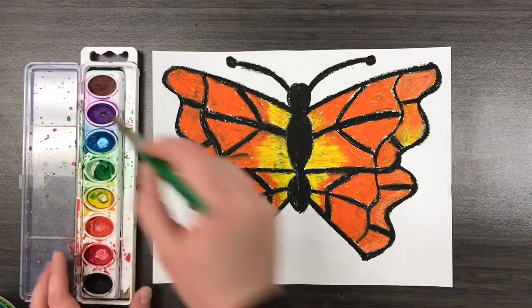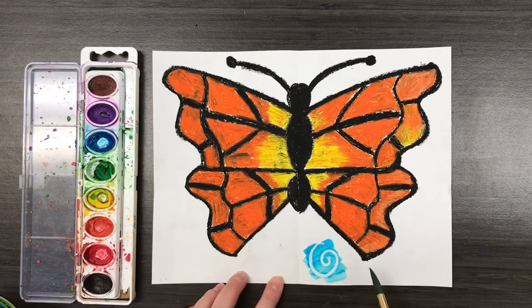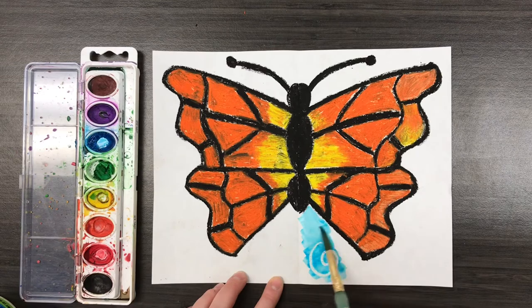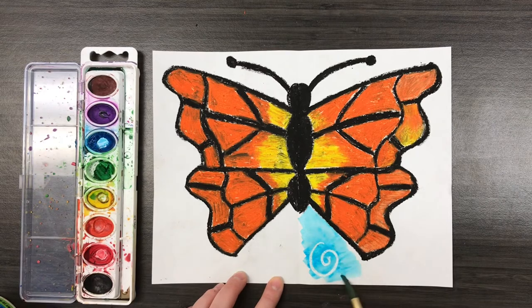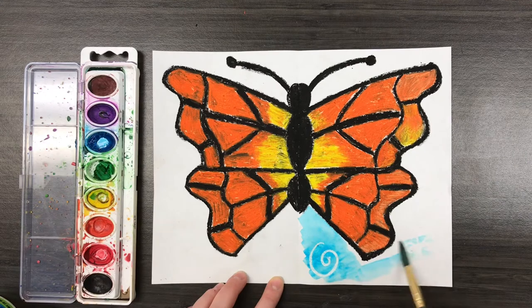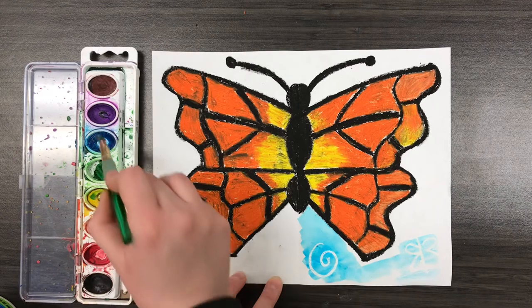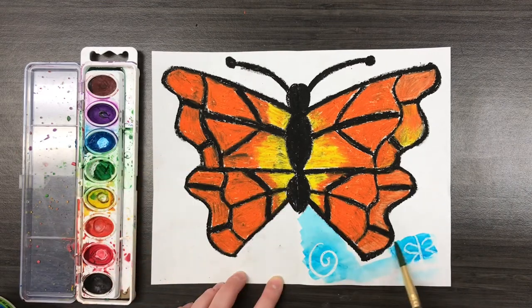So I'm taking some blue paint. You don't have to use blue. You can use whatever color you want. And once I paint over that oil pastel, my design is going to appear. The reason why it does that is because oil from the oil pastel and water from the watercolor paint don't like each other. They don't like to mix. So when the water goes over the oil pastel, it pushes it away. And then we have our design show up.